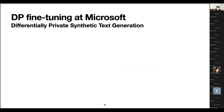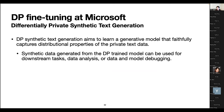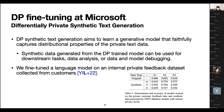As a practical digression, this DP fine-tuning work has seen adoption at Microsoft. One application is what we call differentially private synthetic text generation — building generative text models with DP. This is valuable because you can sample synthetic data from the generative model and use it freely without incurring extra privacy loss beyond what was used to train the original model. We tried this on actual private data, fine-tuning a language model on an internal private feedback dataset collected from customers, and are getting very promising results at epsilon equals 8.